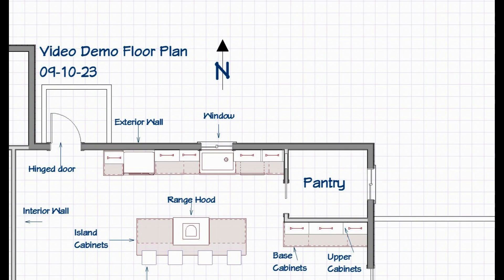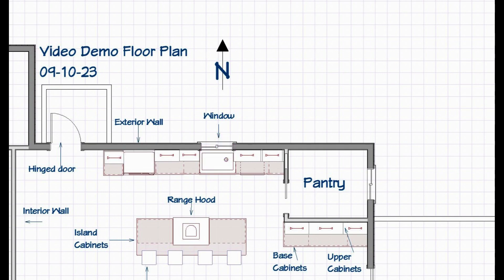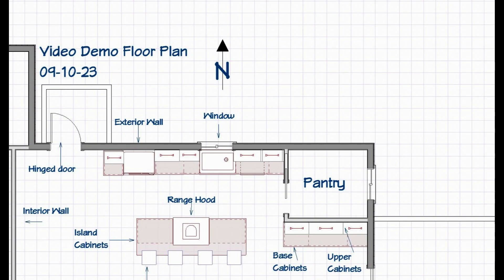Along that back wall at the top, where the window and the exterior wall are, is a row of cabinets. In that row of cabinets, you've got a refrigerator on the left-hand side and, in front of the window, a sink. I didn't call out every single thing because it really muddies up the drawing. At the bottom right, you can see what the base cabinet symbol looks like and what the upper cabinet symbol looks like. Those little symbols on the upper cabinets represent under-cabinet lighting. That's the basics of the top half of the floor plan.